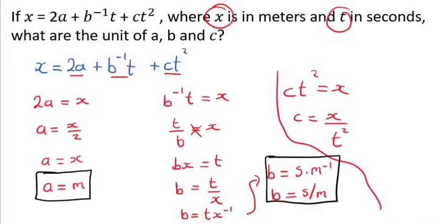The next one is c. So let's just make it like this. For c, this can be written as x t to the power negative 2. So the units for c, x is in meters, t is in seconds negative 2.